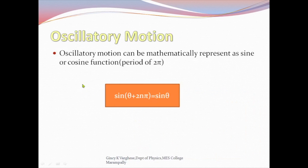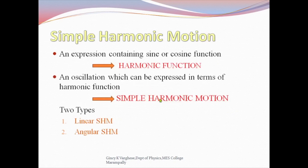Oscillatory motion can be mathematically represented as a sine or cosine function. We know that sine and cosine functions have a period of 2π, so it can be expressed as sin(θ + 2π) = sin θ. An expression containing a sine or cosine function is called a harmonic function, and an oscillation which can be expressed in terms of a harmonic function is called simple harmonic motion.